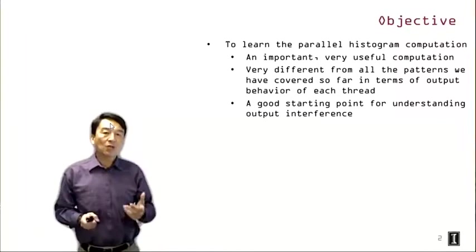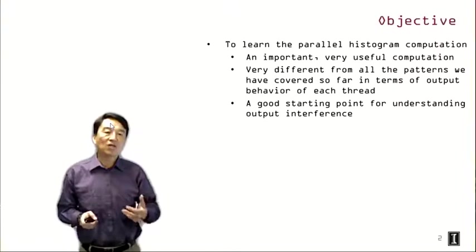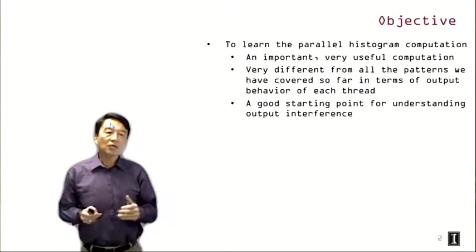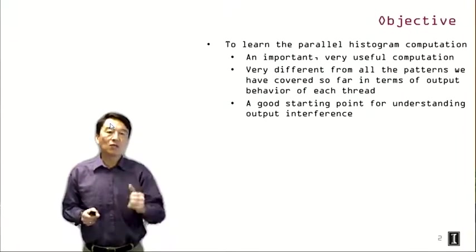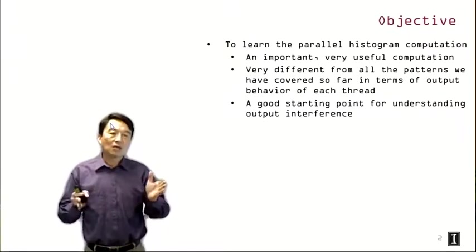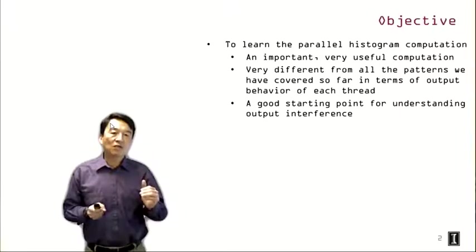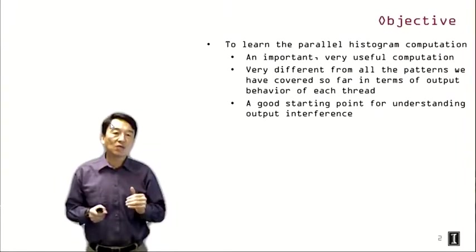The objective of this lecture is to help you learn the parallel histogram computation. By itself, it is a very important, very useful computation, and it's very different from all the patterns we have covered so far in terms of output behavior of each thread. In particular, these threads will have interference when they write into their outputs. All the previous patterns we've looked at, at algorithm design time, we can designate a thread to a particular output location. By organizing the mapping of output elements to threads, we can avoid threads writing into each other's output and having interference. However, in this particular computation, it's very difficult to achieve this goal. Therefore, we have a good starting point for understanding the nature of output interference in parallel computation.